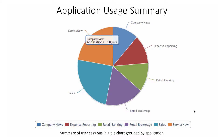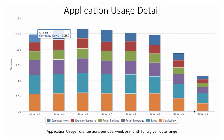The application usage summary lets you view a summary of user sessions or user requests in a pie chart grouped by application. The same environment can have multiple applications, and this lets you view the share of each application from an end-user perspective. The application usage detail report lets the user view session information on a timeline, aggregated on a daily, weekly, or monthly basis, showing the share of users each application is having in that time range.